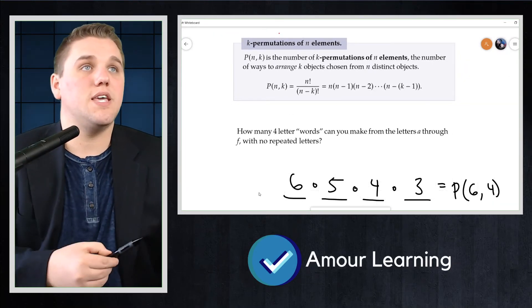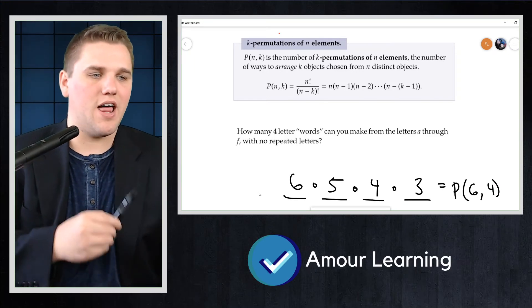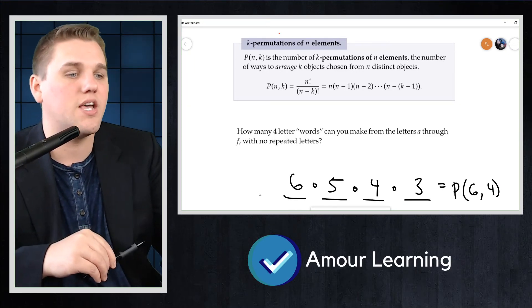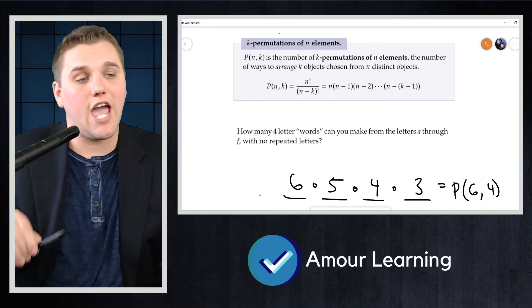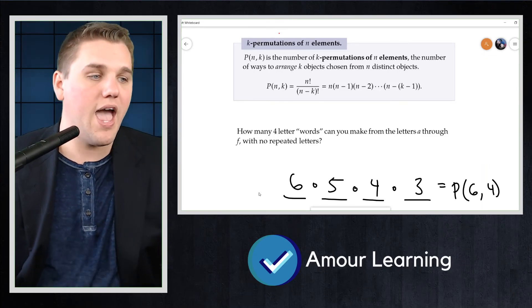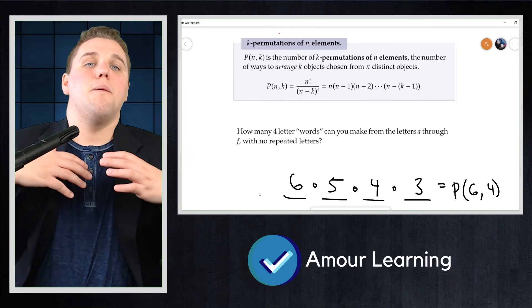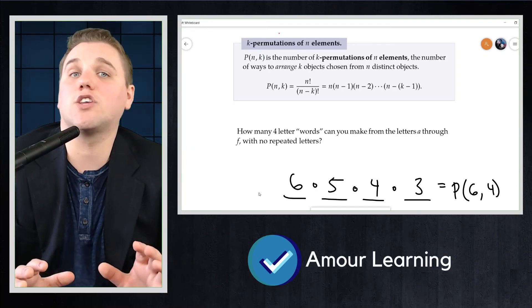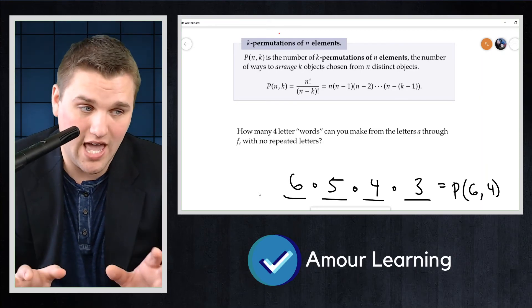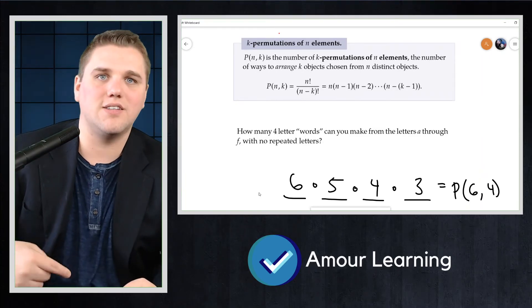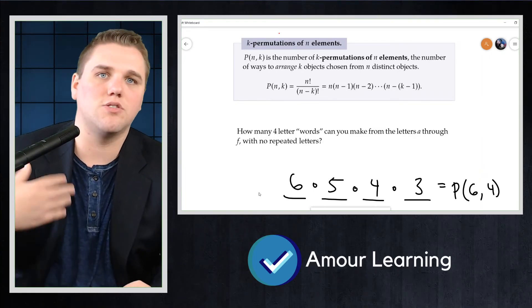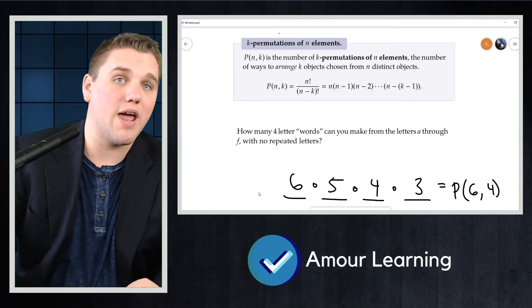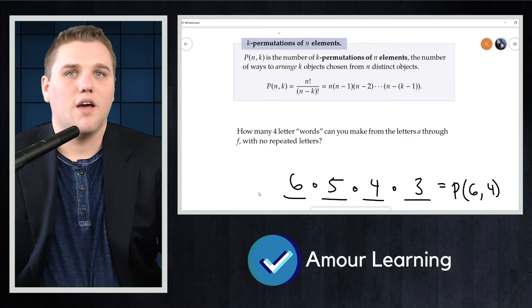Now let's take a look at one more thing here that's really important. So this means that K permutations of an N element set, P(N,K), is the number of K permutations of N elements, the number of ways to arrange K objects chosen from N distinct objects. But this is the big closed formula for P(N,K). It's just N factorial divided by (N minus K) factorial, which is just N times (N-1) times (N-2) times (N-3), all the way down to (N-K+1).